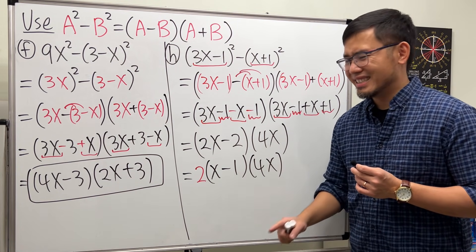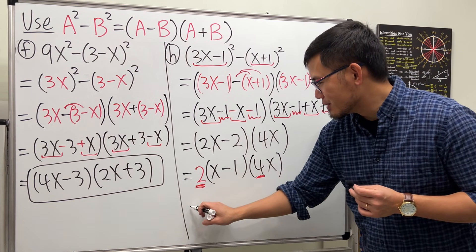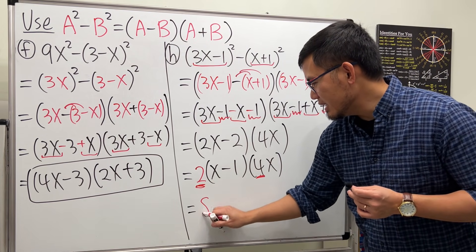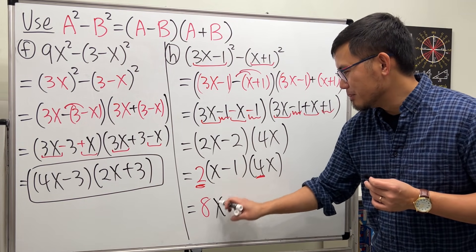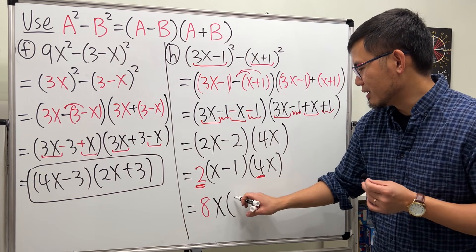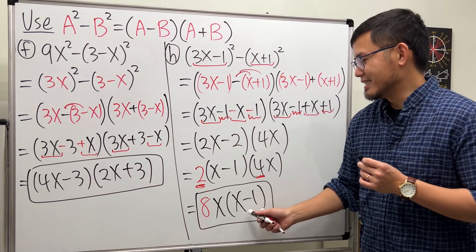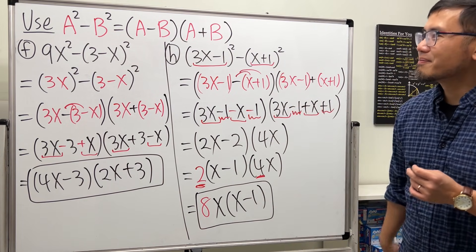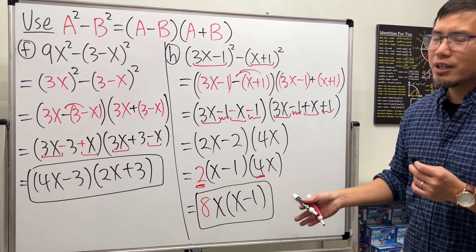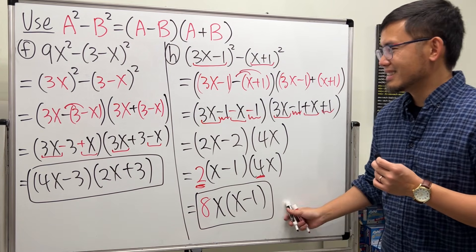Are we done? Not quite, because we can multiply the 2 and the 4 together, so we write it down as 8. And usually we put down x first before a parentheses of the x minus 1, so the final result is 8x times the parentheses x minus 1. So hopefully this helps, and make sure you do try the other questions. That's it.